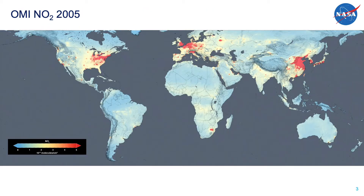This global NO2 map shows the annual average for 2005, the first full year of OMI nitrogen dioxide data. The red areas on the map are the regions with the highest levels of NO2, places such as the northeastern United States, northern Europe, eastern China, and even northeastern South Africa.